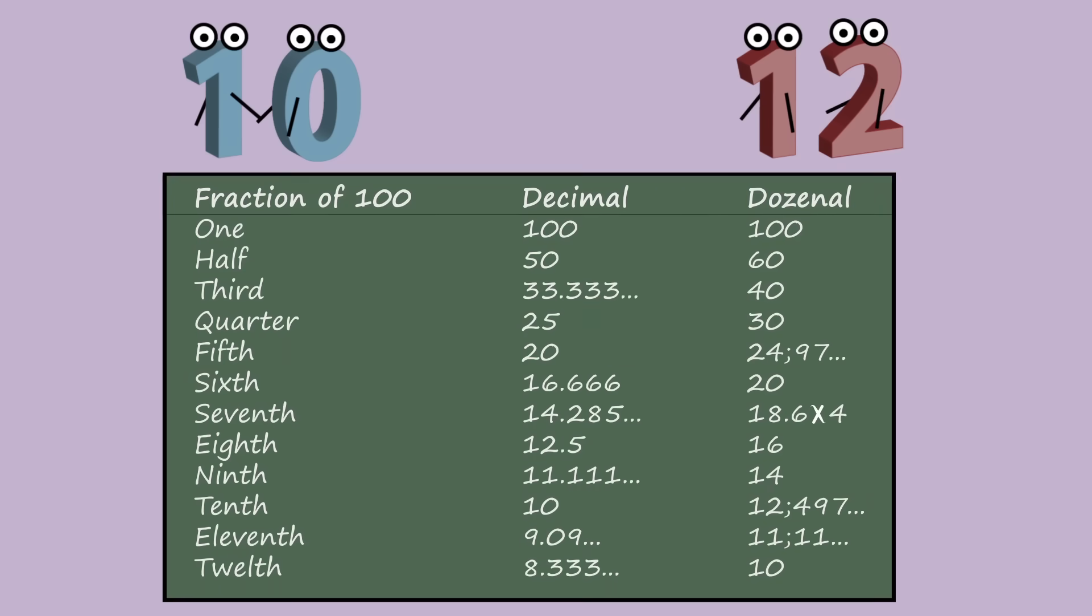If you compare how 100 is divided by the numbers 1 to 12 in base 10 and base 12, you can see how much cleaner and more simple base 12 is.